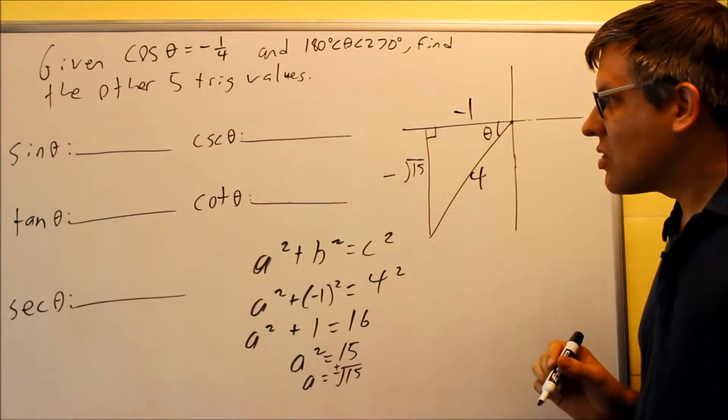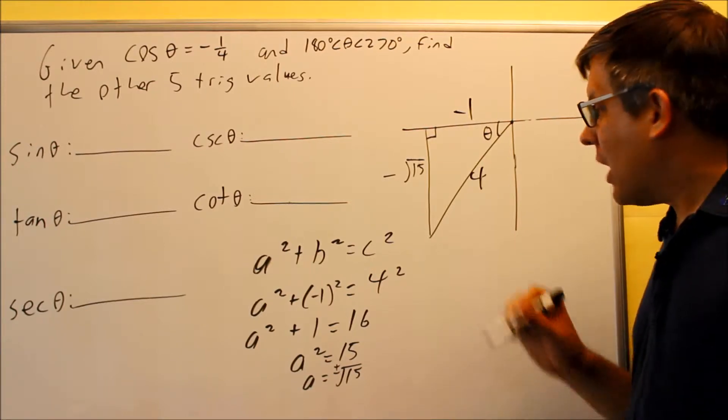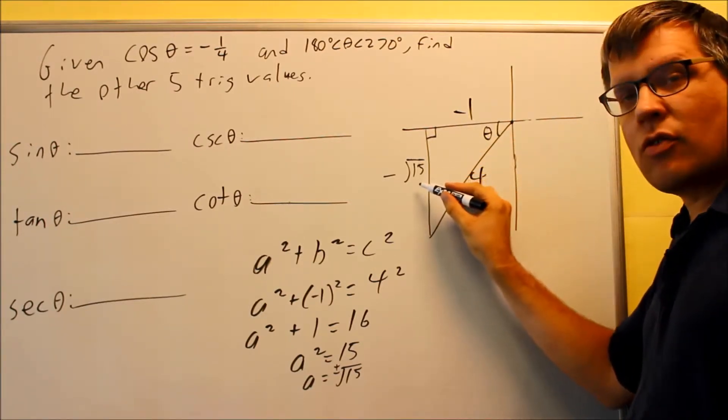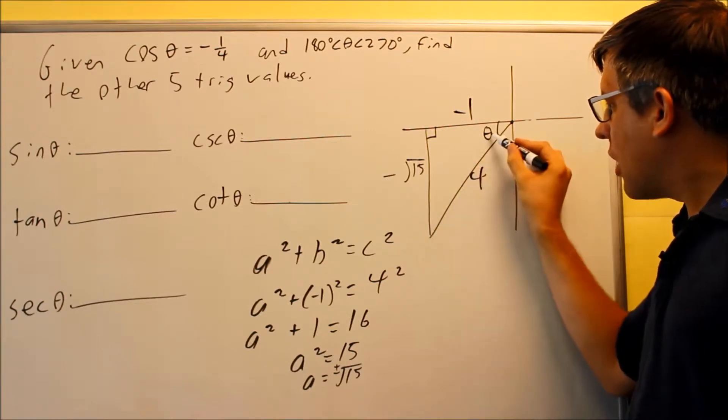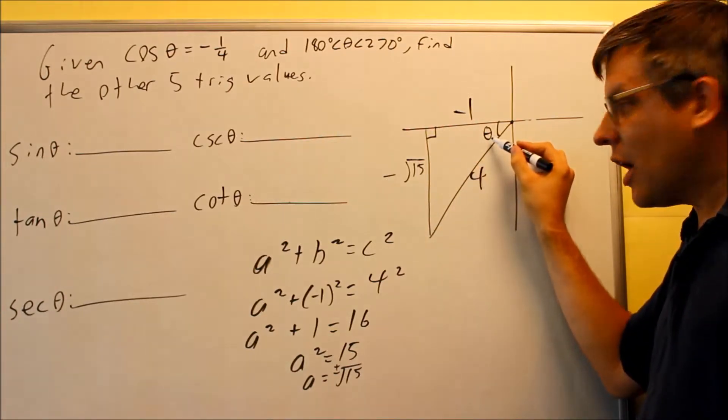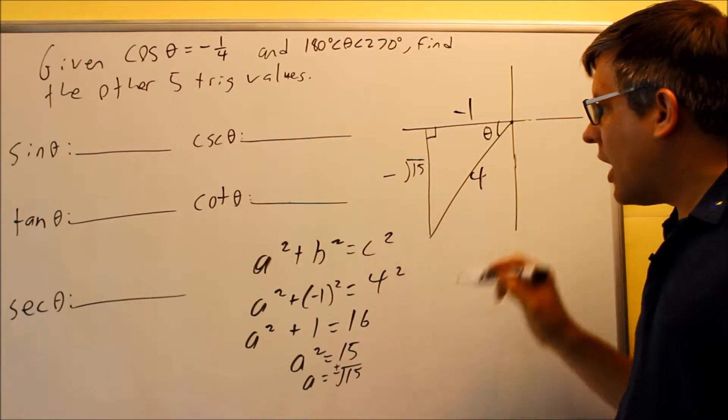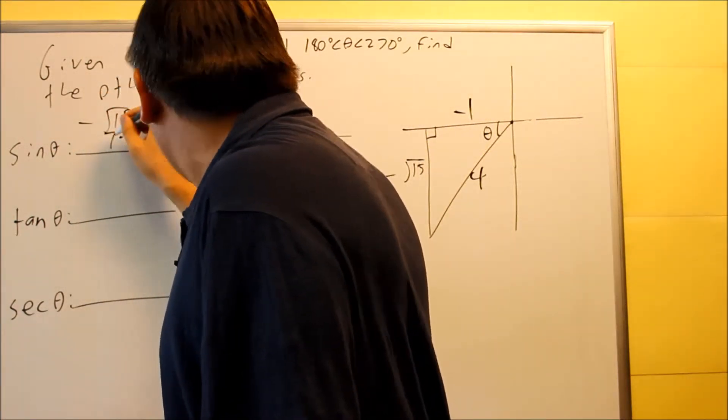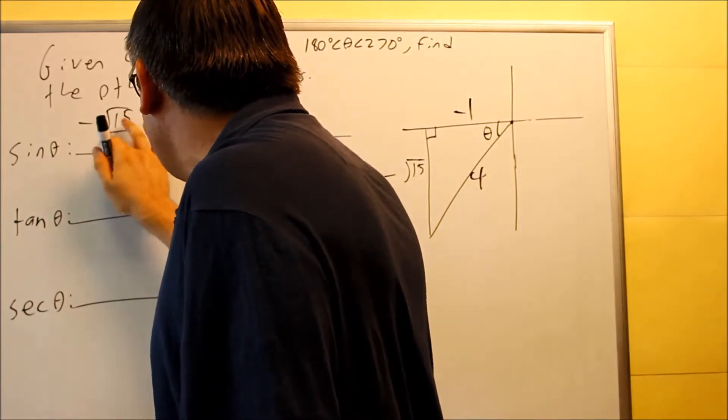So sine, sine our definition, is opposite over hypotenuse. In this case, your opposite side is going to be negative root fifteen. It's opposite or across from the triangle where the theta is at. So that's opposite over hypotenuse, negative root fifteen over four.